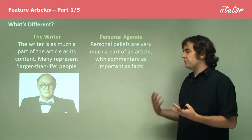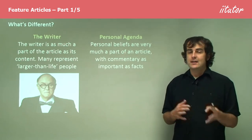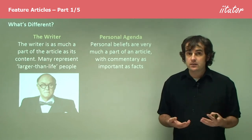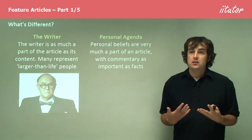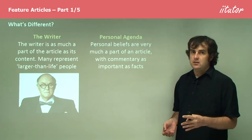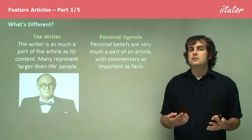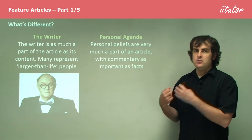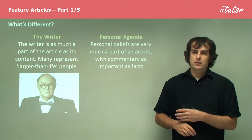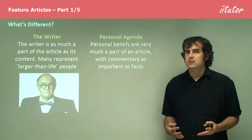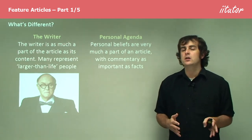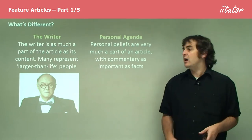Some feature article writers do attempt to show a degree of even-handedness and impartiality, but even so, whatever they write is still their opinion. You can't treat it as an impartial article, because whenever someone's opinion is involved, there is an element of bias — even if the subject they're discussing is represented in a seemingly unbiased way.